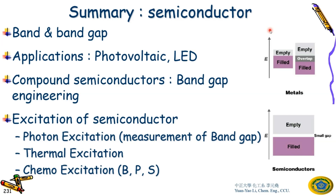Let me summarize the semiconductor topics. You need to know about bands and band gaps. For applications there are photovoltaics, LEDs. For compound semiconductors, there is band gap engineering. There are three ways to excite a semiconductor: photon excitation (which lets you measure the band gap), thermal excitation, and chemical excitation — which is what we introduced today.